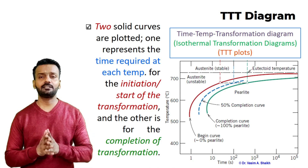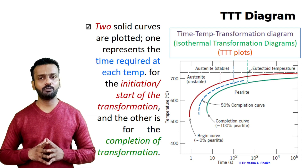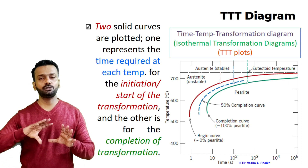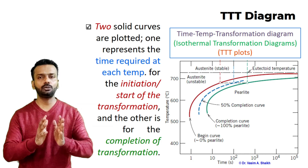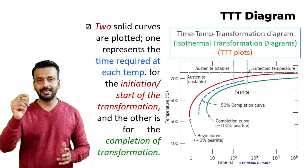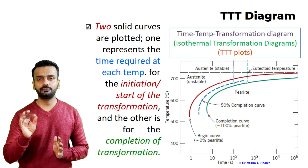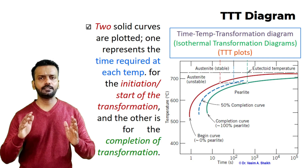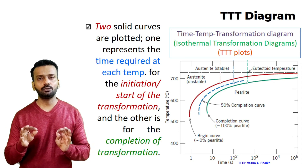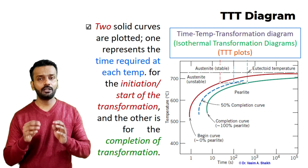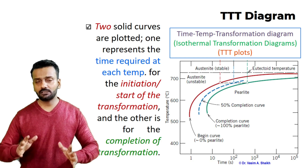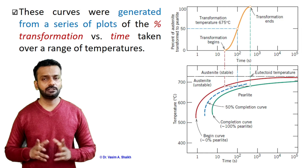This plot represents the eutectoid composition. On the x-axis you see time, and on the y-axis you see temperature, and it shows the transformations which are happening. There are two solid lines — the red line shows the start of the transformation, and the blue line shows the end. A dashed line in between shows the 50% transformation point. When you draw the cooling curve on this diagram, you can know exactly what transformation will happen at what time and what the final phase or structure will be.